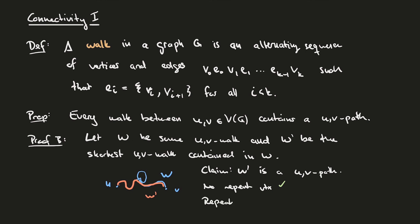On the other hand, if we do have a repeat vertex x, then we have a walk going from u to x, then doing something between x and x, then continuing to v. But in this case, we can form a shorter walk going from u to x, and then from x directly to v, without doing the loop. This shorter walk w double prime would be contained in w and shorter than w prime — a contradiction, since w prime is the shortest walk contained in w. Therefore, w prime has no repeat vertices and is thus a u-v path.